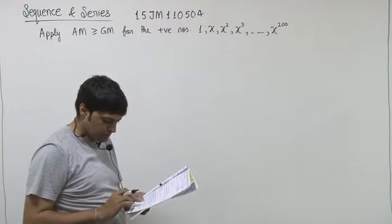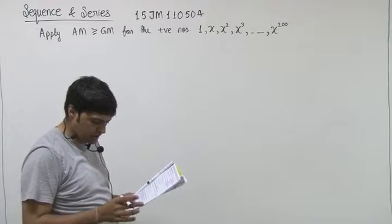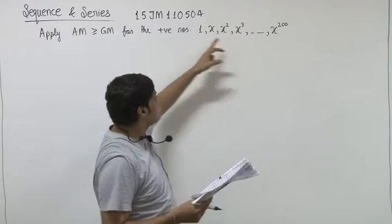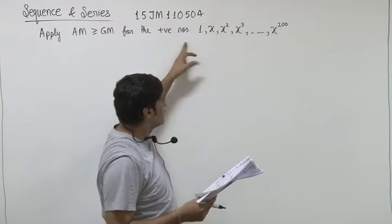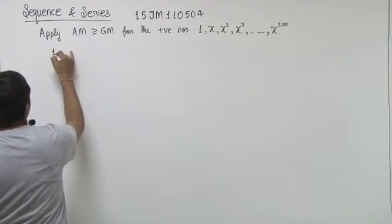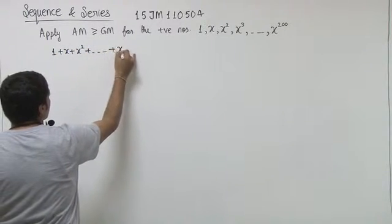We have to find the greatest value of this expression, x to the power 100 upon 1 plus x plus x square plus x cube. In arithmetic mean we will get the denominator: 1 plus x plus x square up to x to the power 200.